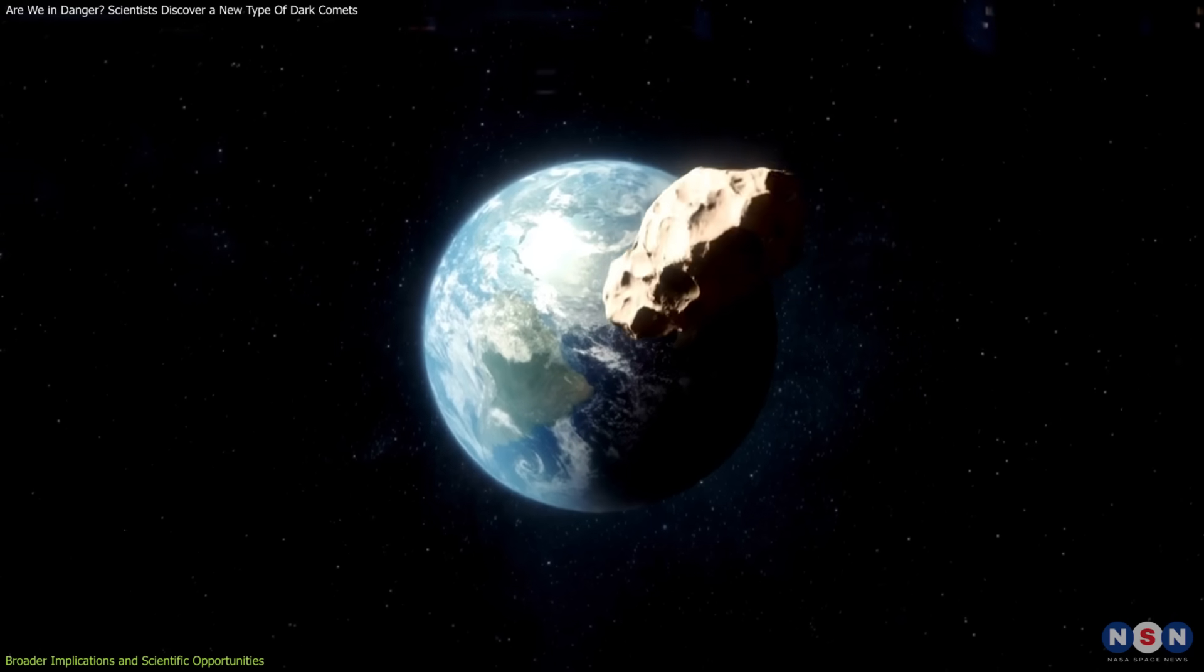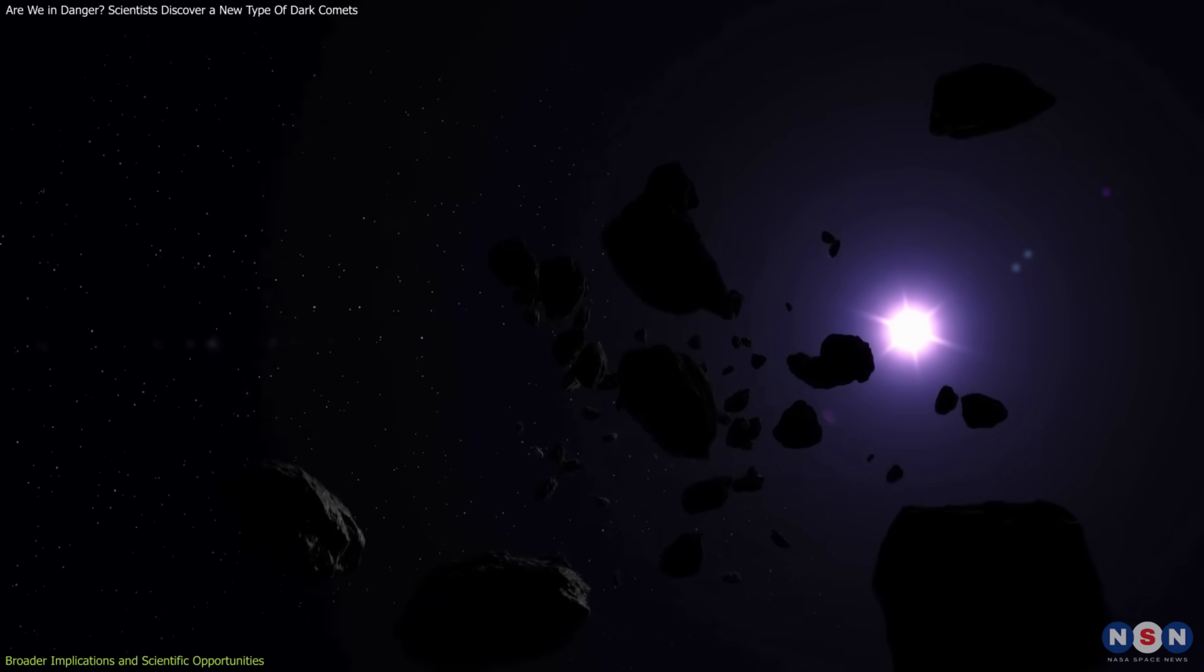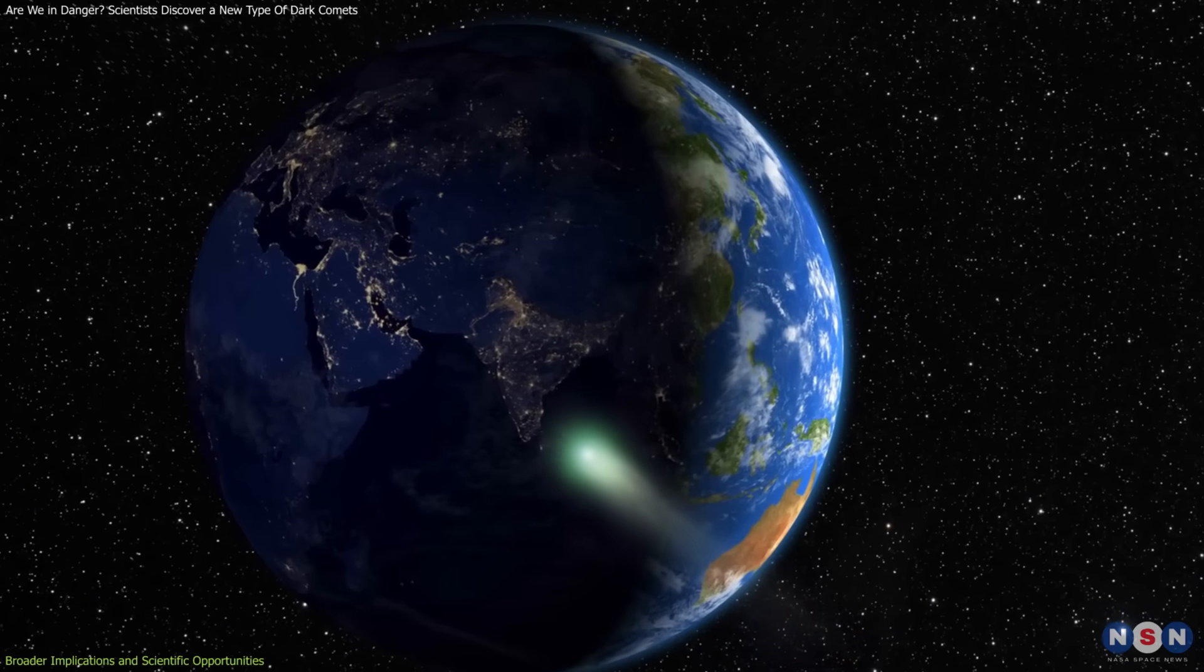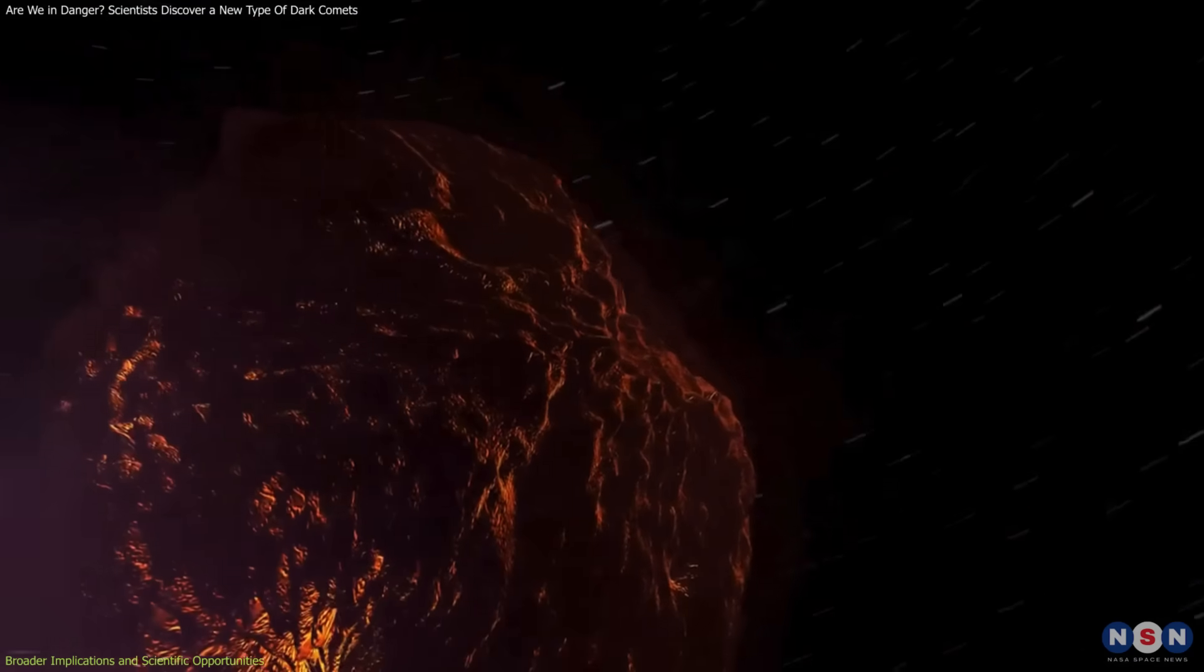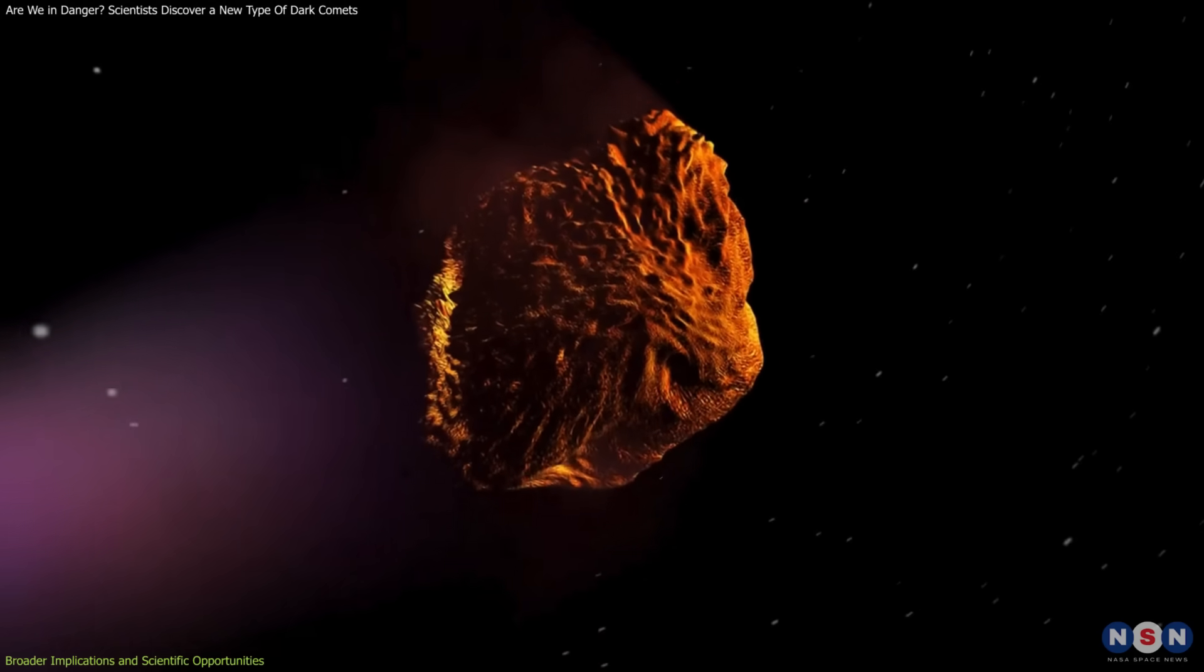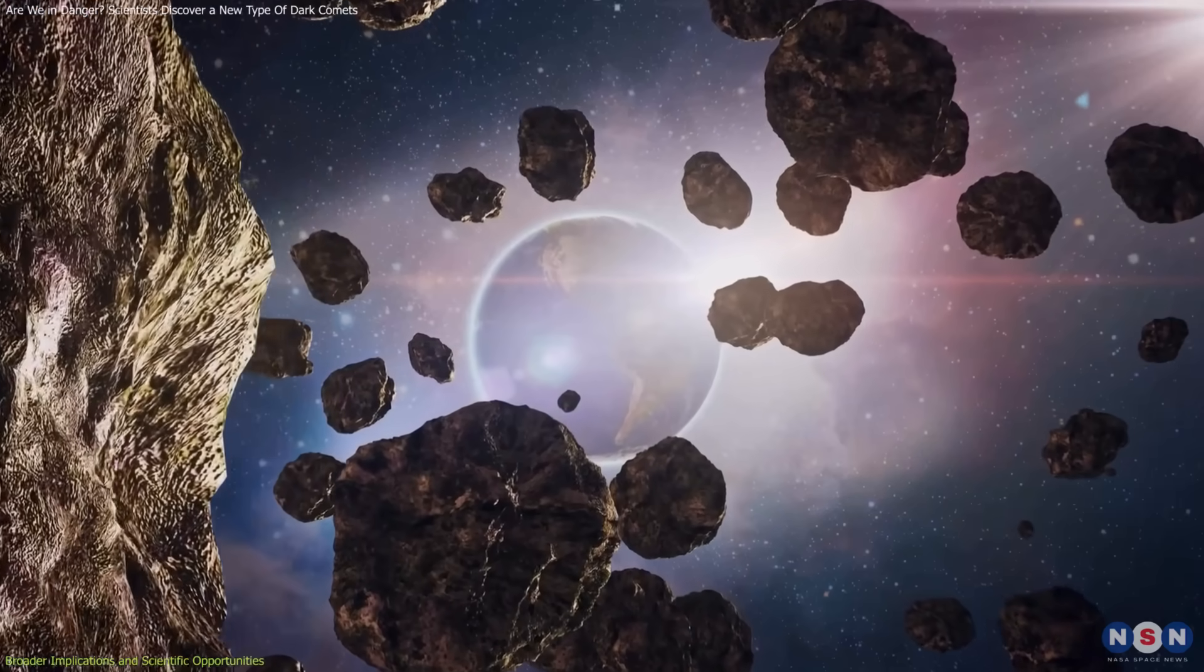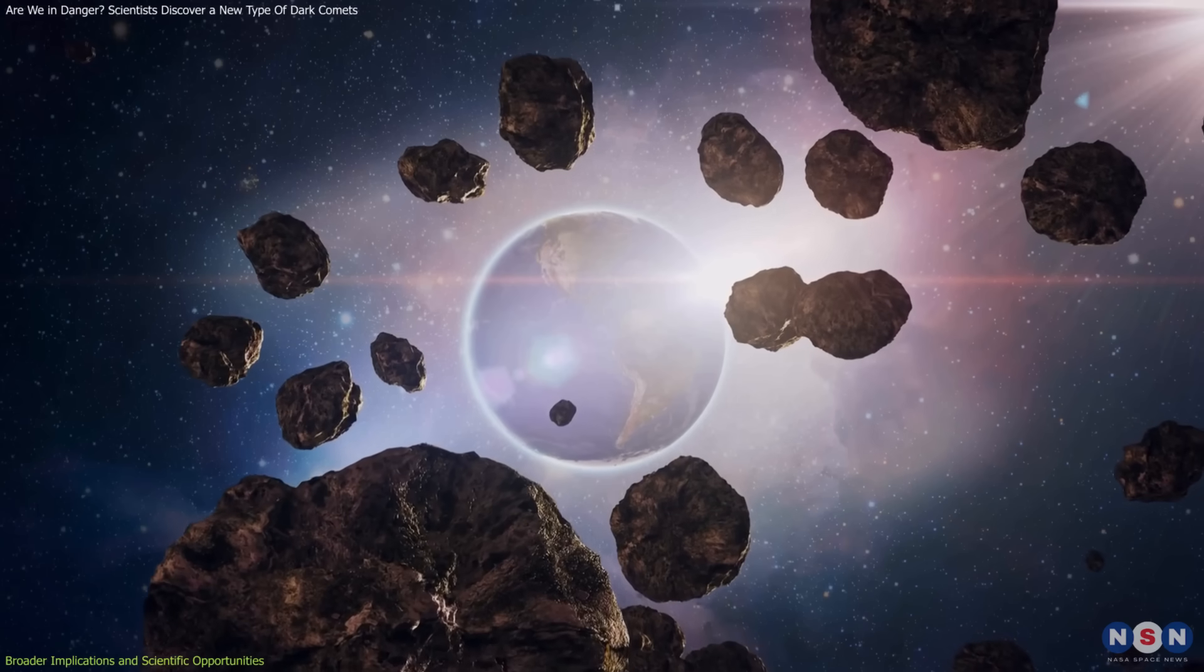The idea that comets brought water to Earth is well-established, but dark comets add a new layer to this narrative. Unlike traditional comets, which are easier to identify and study, dark comets might represent a hidden reservoir of volatile materials. Their stealthy nature makes them harder to detect, but it also means they could have contributed to Earth's development in ways we've only begun to understand.